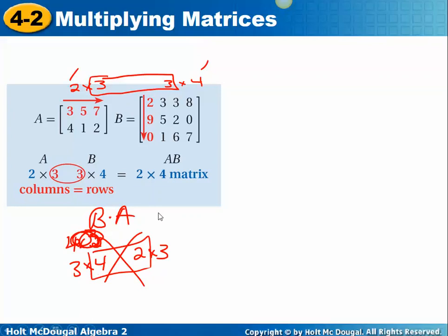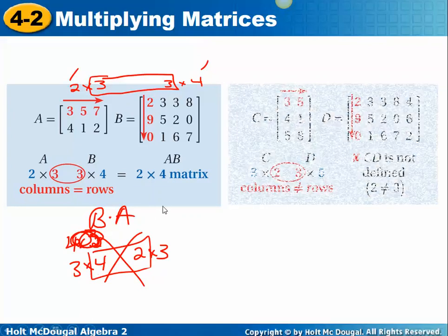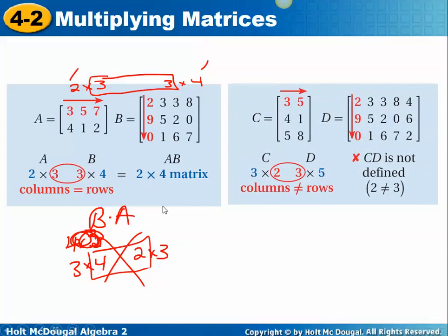Multiplication of matrices is not commutative. In another example, C is a 3 by 2 and D is a 3 by 4 or 5. These two numbers do not match, so you could not multiply C times D. Not in this order anyway — you could check if D times C is defined, but C times D is not defined.